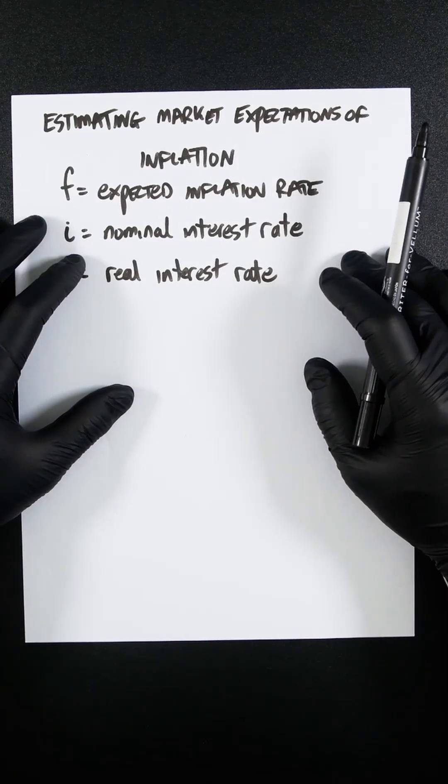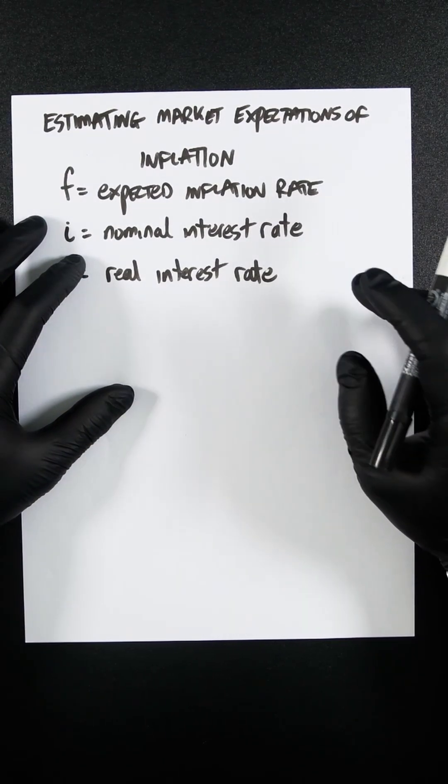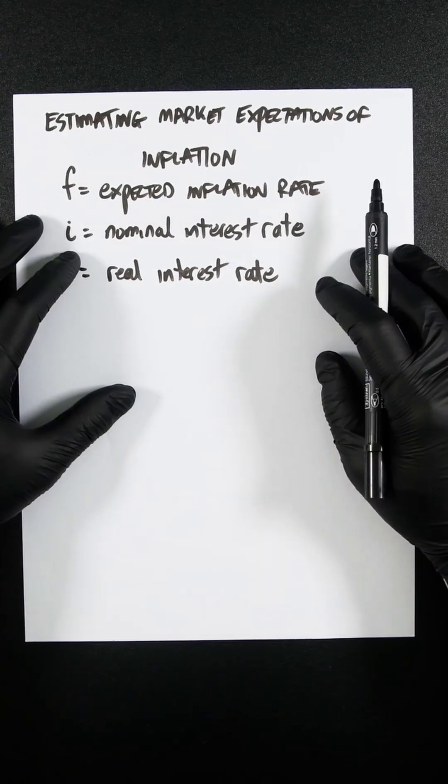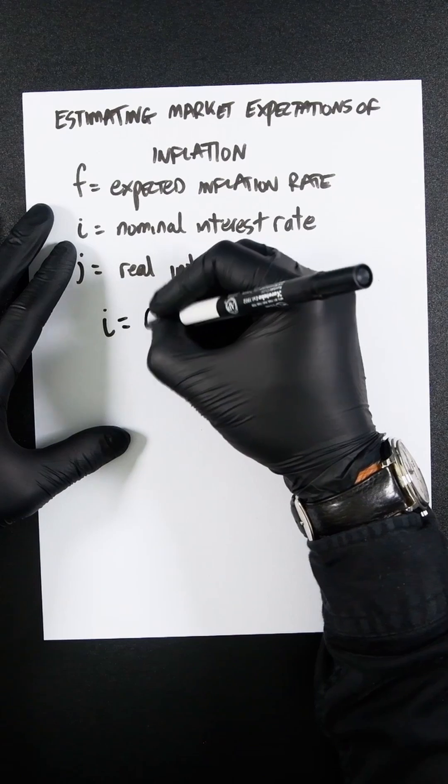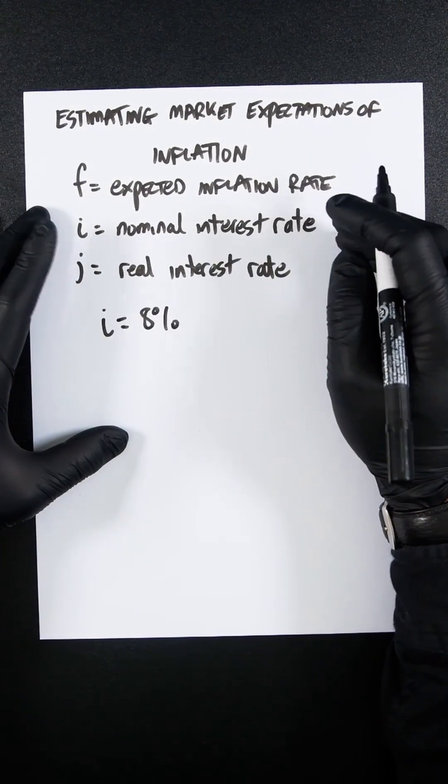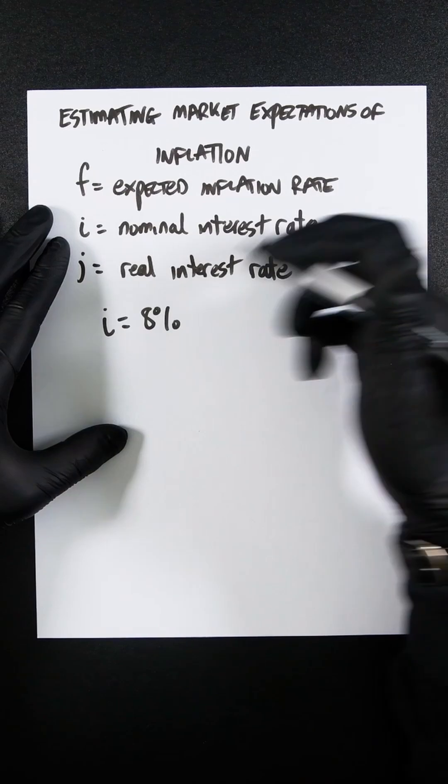Index-linked guilds reflect market expectations of RPI inflation, not CPI. Anyway, so i is going to be, let's say, 8%. So that's going to be the return from our government bond average.